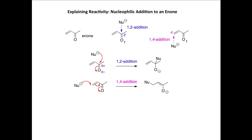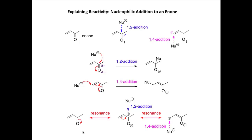We can also describe 1,2 and 1,4-addition by looking at resonance. For the enone, we can draw alternative resonance forms: taking electron density from the pi bond of the C=O and pushing toward the electronegative oxygen gives a resonance form with a positive charge on the carbon directly attached to oxygen, explaining why a nucleophile attacks there in 1,2-addition. Alternatively, taking electron density from the C=C pi bond toward that positively charged carbon gives a resonance form with a positive charge at the end of the molecule, explaining why nucleophiles are also attracted to that carbon in 1,4-addition.